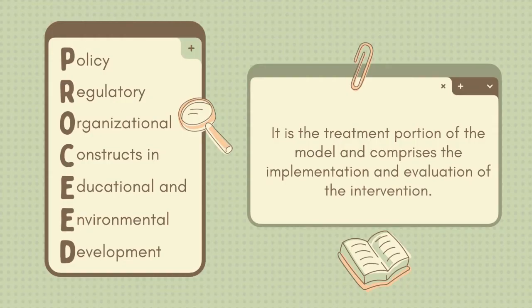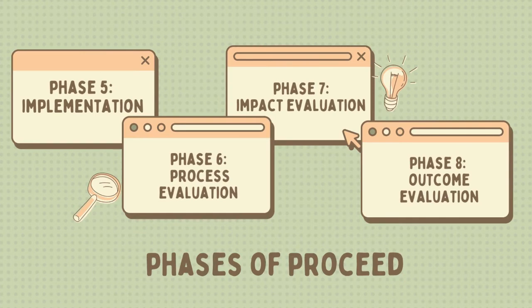PROCEED stands for Policy, Regulatory, Organizational Constructs in Educational and Environmental Development. It is the treatment portion of the model and comprises the implementation and evaluation of the intervention. There are also four phases under PROCEED, and each will be tackled in the next slides.